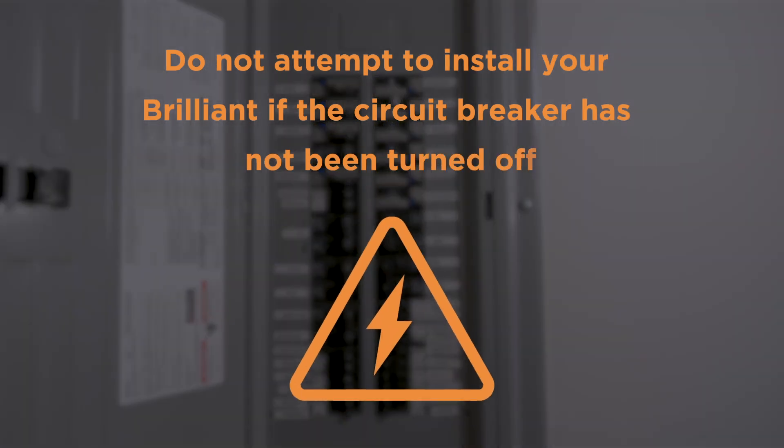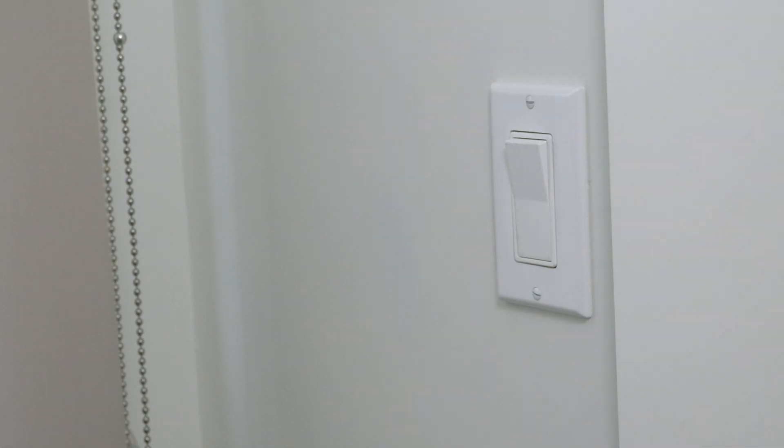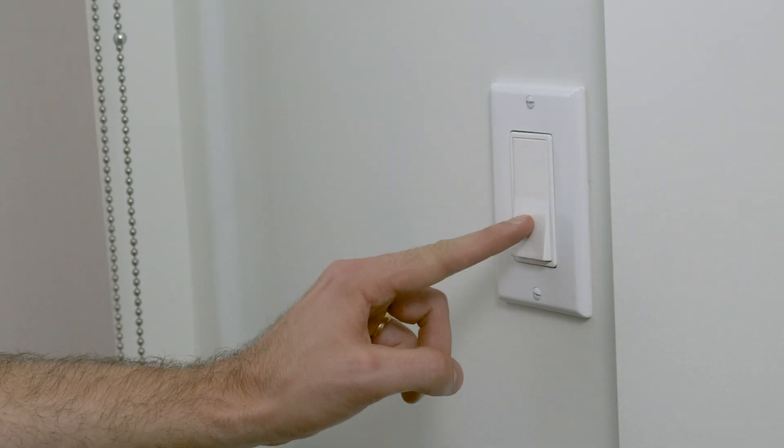Do not attempt to install your Brilliant if the circuit breaker has not been turned off. Before proceeding with removing your light switch and installing Brilliant, check that your light switch has no active power.